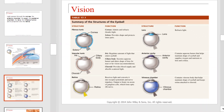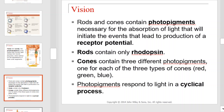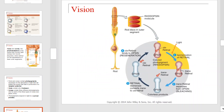This table provides a summary of the structures of the eyeball. Rods and cones are the photoreceptors embedded in the retina that are responsible for converting light energy into neural impulses. They contain photopigments necessary for the absorption of light that initiates events leading to the production of a receptor potential. Rods contain only the pigment rhodopsin, while cones contain three different photopigments — one for each of the three types of cones: red, green, and blue. Photopigments respond to light in a cyclic process illustrated here.